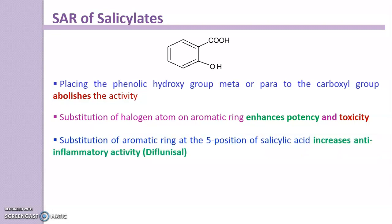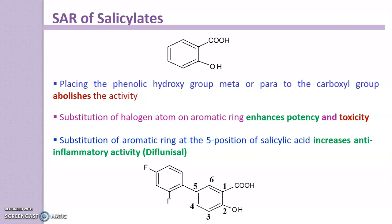Substitution on the aromatic ring at the fifth position of salicylic acid increases anti-inflammatory activity. An example is diflunisal. Here is the structure of diflunisal, which has a substitution at the fifth position — a 2,4-difluorophenyl group — and it produces very good anti-inflammatory action.